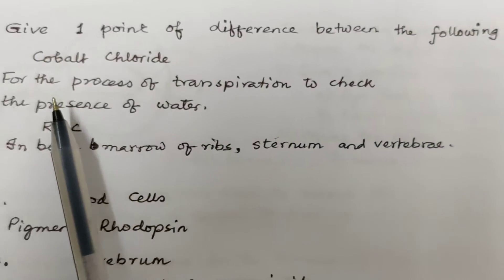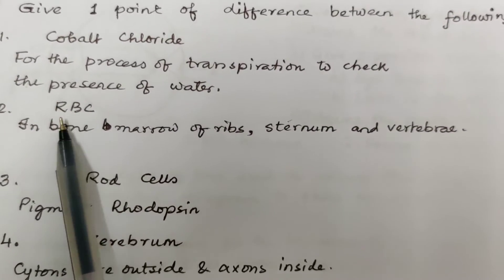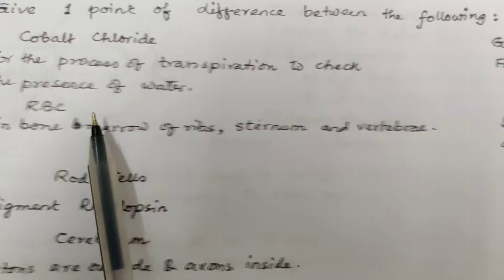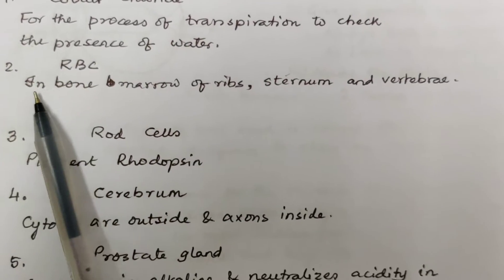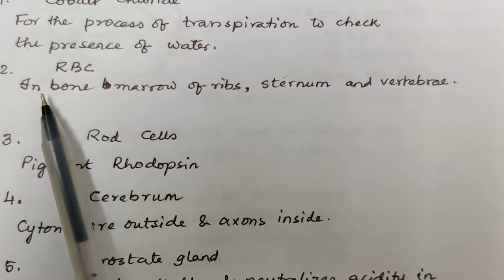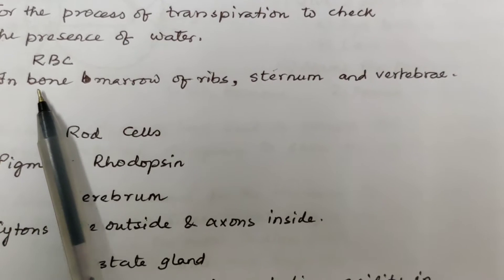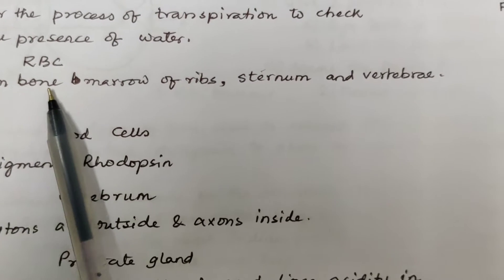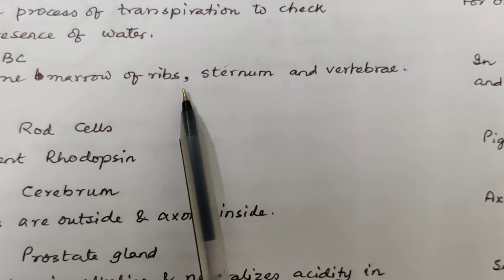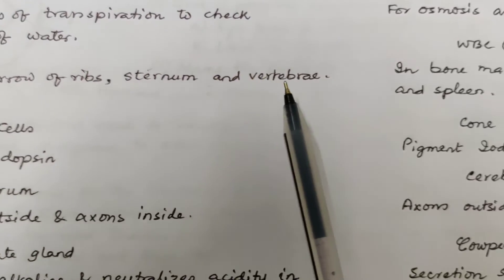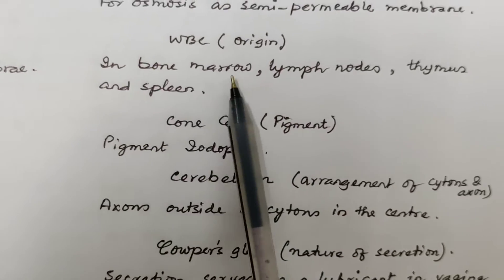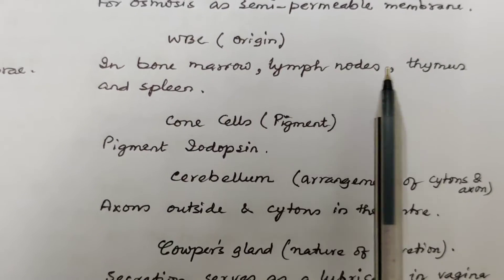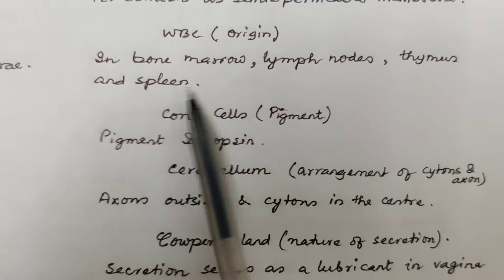Next: the difference between RBC and WBC based on their origin. RBC originates in the bone marrow of ribs, sternum and vertebrae, whereas WBC originates in bone marrow, lymph nodes, thymus and spleen.